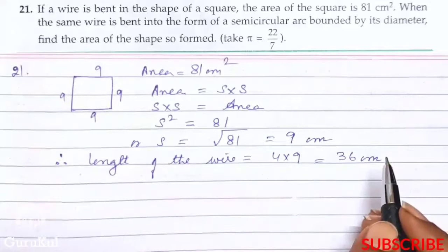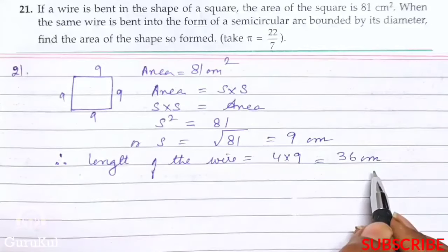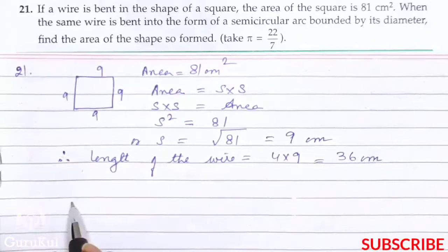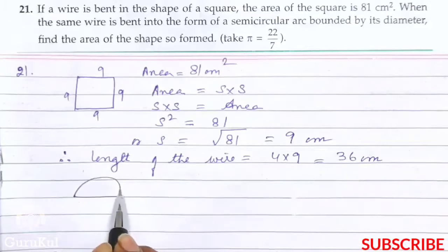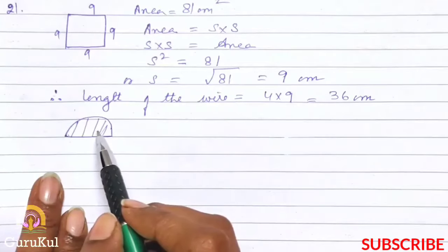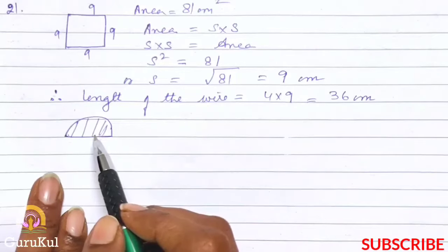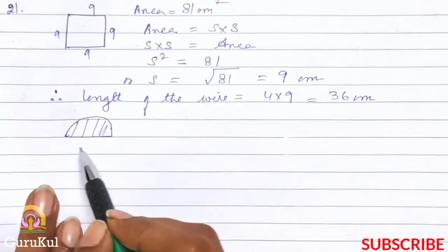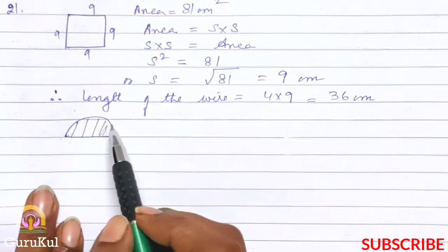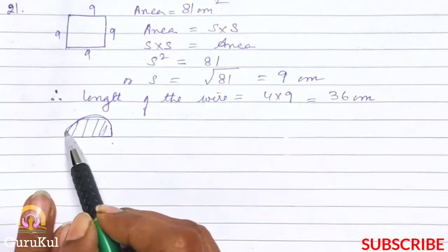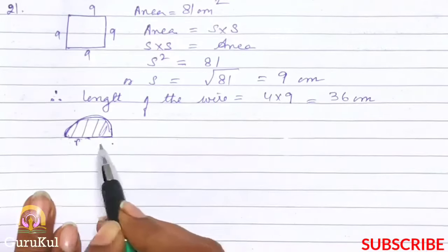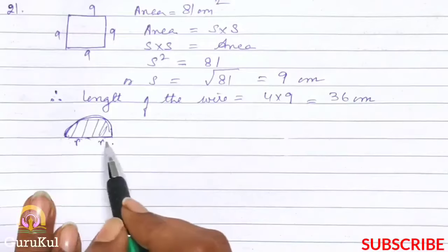So hum log apna length of the wire pata karenge. Therefore length of the wire is equal to 4 into 9, that is 36 centimeter. Ab bola gaya hai ki is length ke wire se naya shape diya gaya and that is semicircle. To find the area of the semicircle, we need the value of the radius. Radius find out karne ke liye, we need the entire boundary - including the diameter 2R.